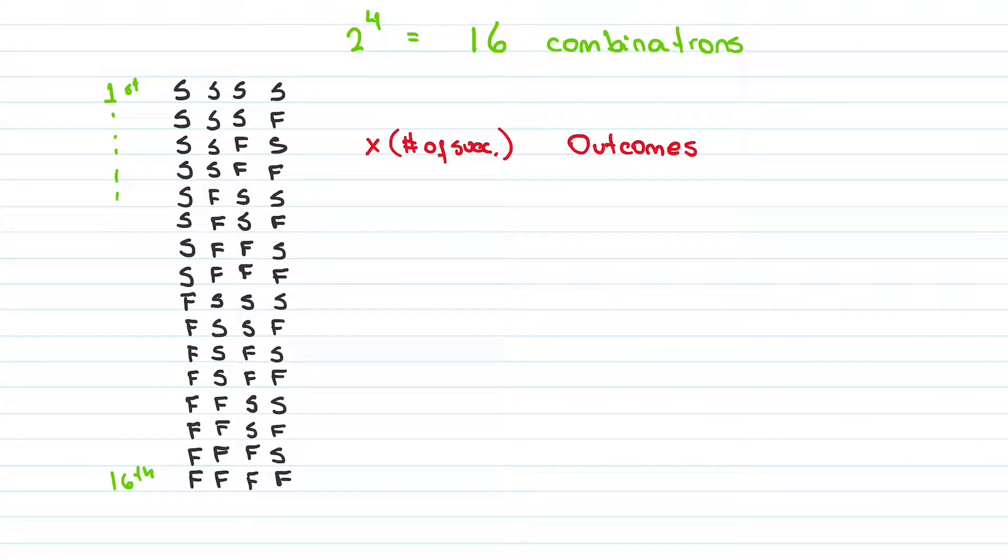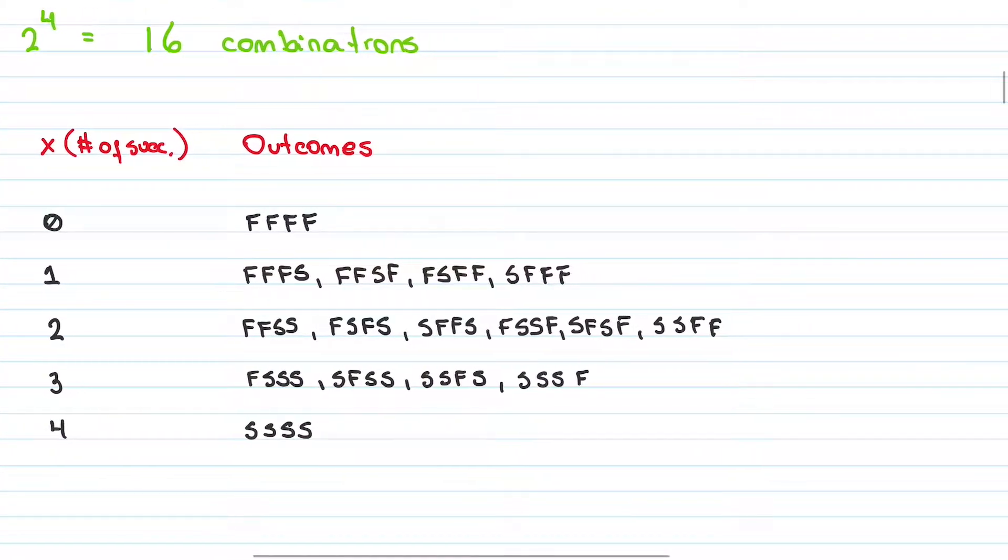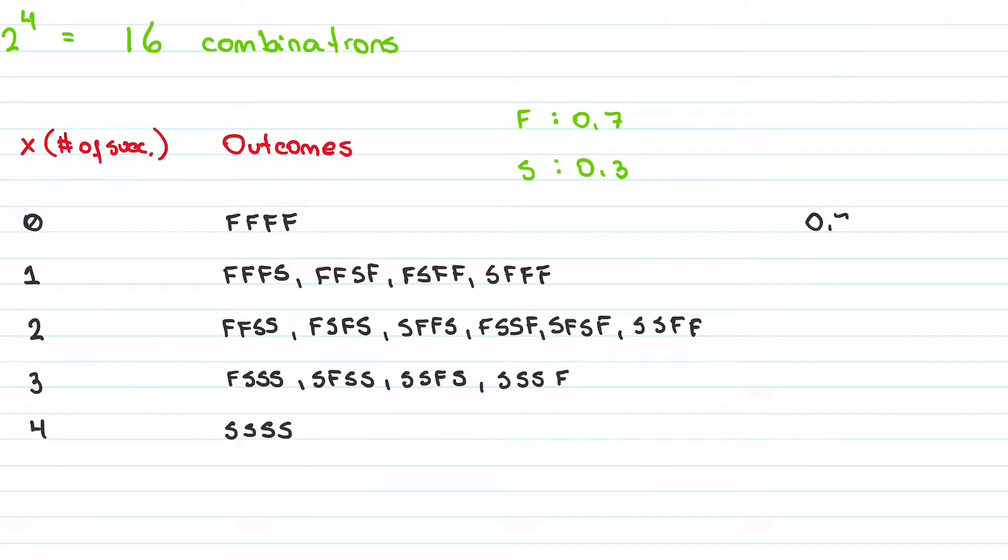We can create a table based on the number of successes represented by the letter X, from 0 to 4, where we can distribute our 16 outcomes. Recall that the probability of failure is 0.7 and success is 0.3. With that information, now we can calculate the probability of success from 0 to 4.